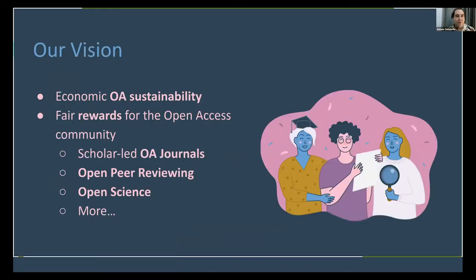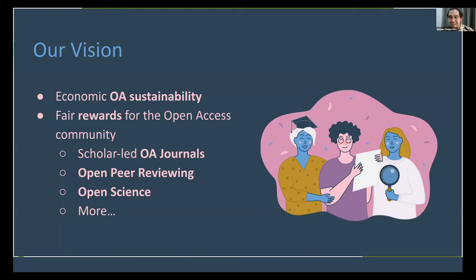What we want is to bring economic sustainability to open access, because we know there are many scholar-led journals and small societies that would enjoy a bit more economic sustainability. We want to do it by bringing rewards for the best practices in open access — rewards for scholar-led open access journals that are cheap for authors, rewards for open peer reviewing and fair peer reviews, and rewards for open access and open science practices.